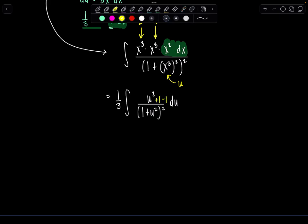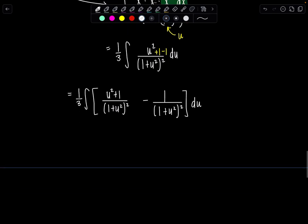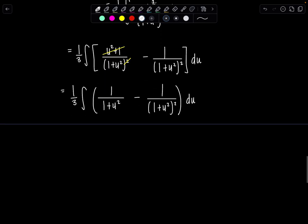So I added one and subtracted one, which means now I have one third times the integral u squared plus one over one plus u squared squared minus one over one plus u squared squared, just to kind of simplify things a little bit du. And then from here, what do we have? This is one third integral. Now notice u squared plus one will cancel with one of the u squared plus ones in the denominator. So I just have one over one plus u squared minus, and then this one stays squared down there. So let's break this into two little baby integrals that we'll work on. This will be number one. This will be number two.